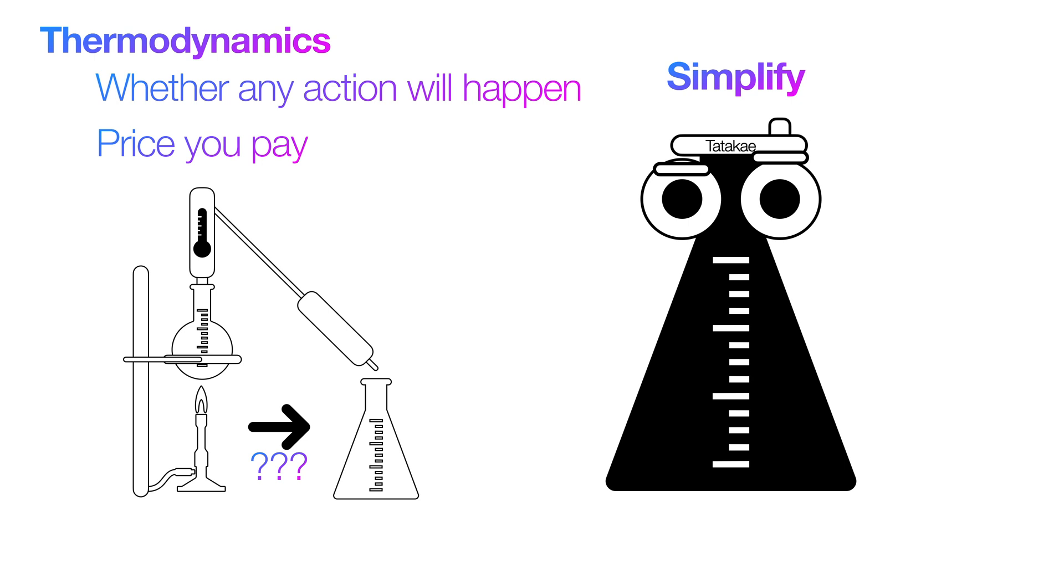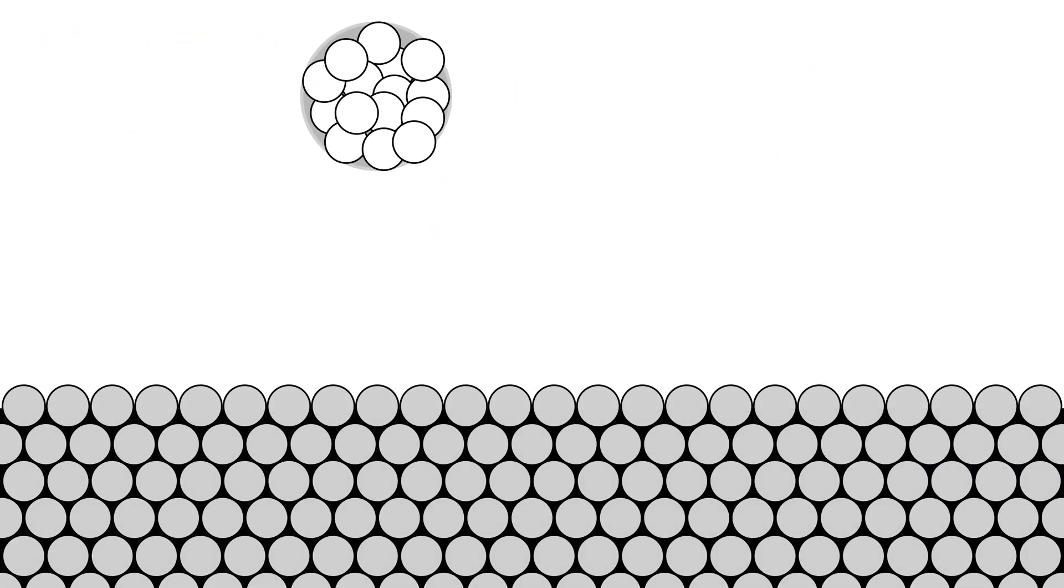Let's forget about chemical reactions and focus on a much simpler action: dropping a ball on the floor. In the realm of thermodynamics, we divide the universe into two parts. The system is what we're focused on, and the surroundings are everything else in the universe that is not the system. In this case, our ball is the system and the floor is our surrounding.